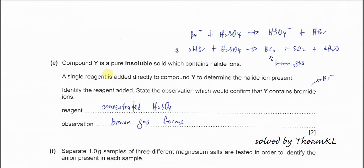Compound Y is a pure insoluble solid which contains halide ions. A single reagent is added directly to Y to determine the halide ion that is present. Identify the reagent that is used. Very easy because it's halide ions. We know that all the halide ion salts will react with concentrated H2SO4. So the reagent that we can use is concentrated H2SO4.